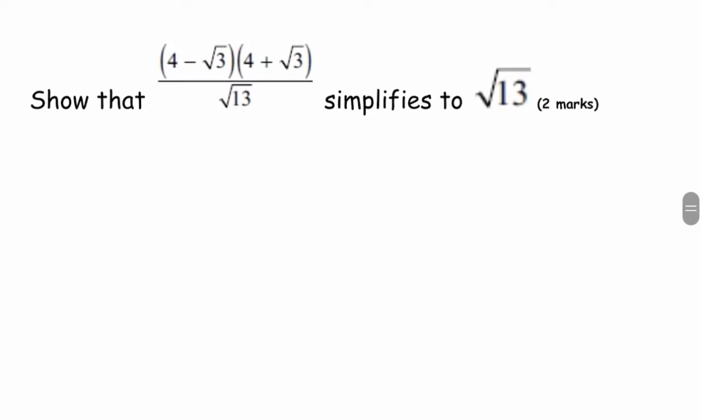Next question. Similar question. We need to show this simplifies to root 13. So let's use the difference of two squares again. So we have 4 squared minus root 3 squared over root 13.